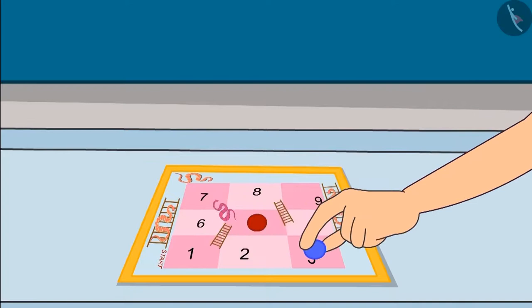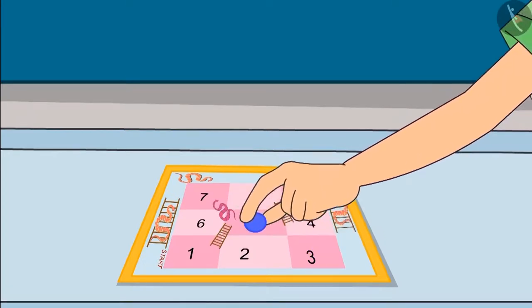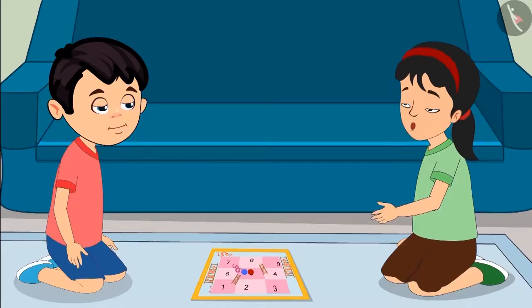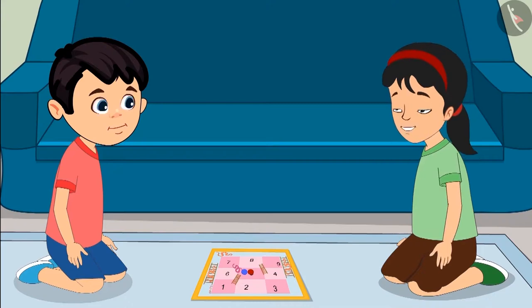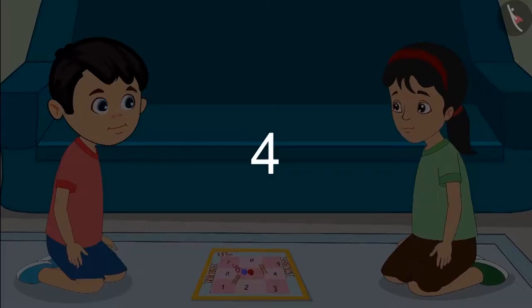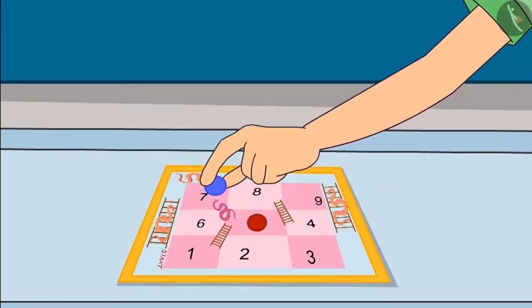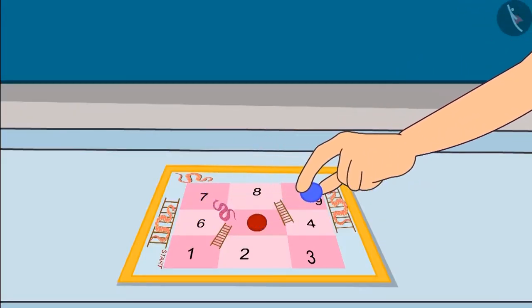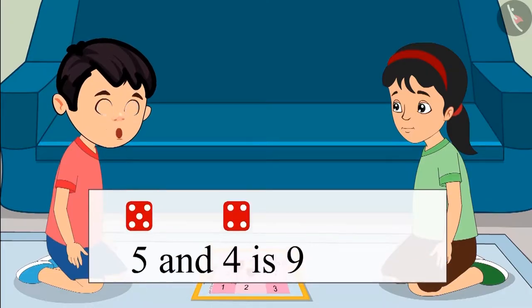1, 2, 3, 4 and 5. My piece is on number 5. So now I will move it 4 places forward. 1, 2, 3 and 4. Now my piece has come to number 9. That means adding 5 and 4 gave us 9.